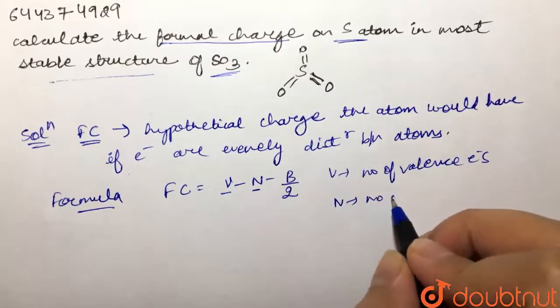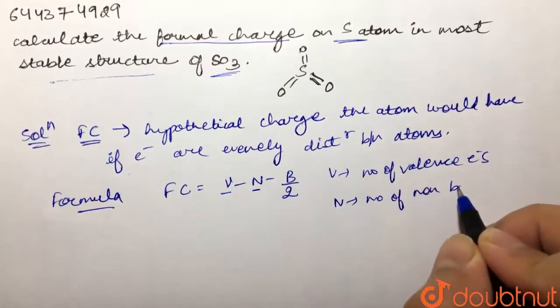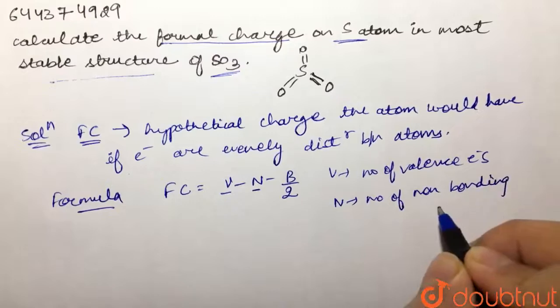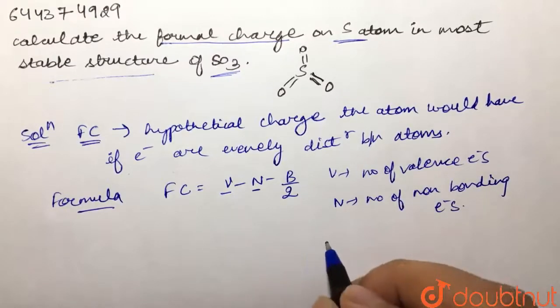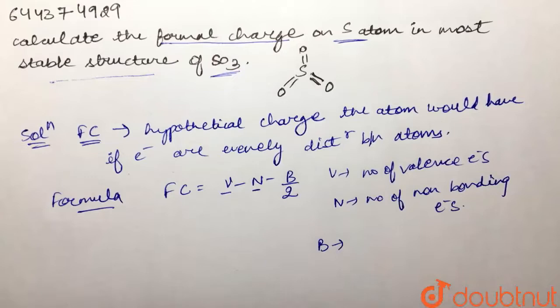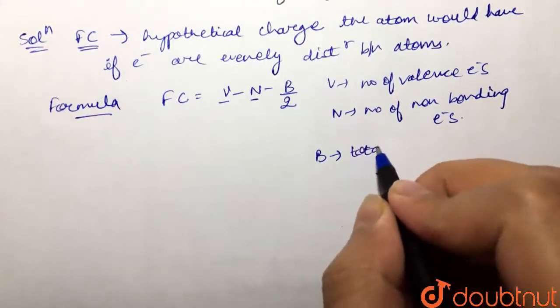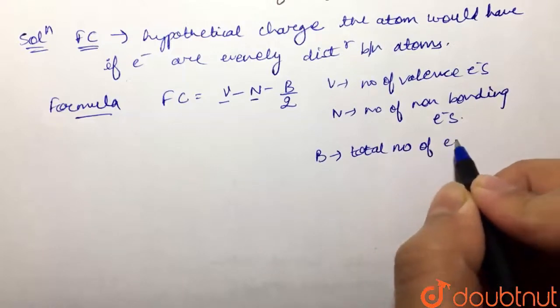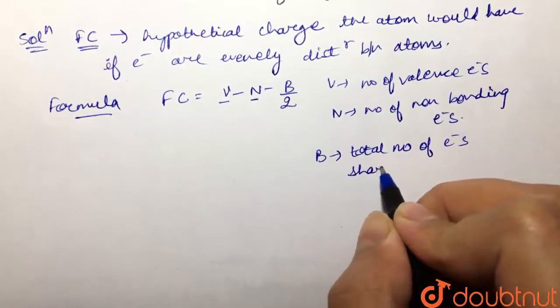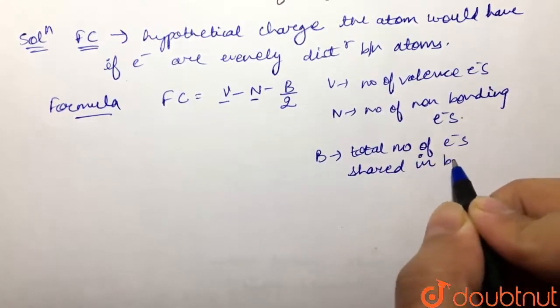number of non-bonding electrons not involved in bonding, and B is the total number of electrons shared in bonds.